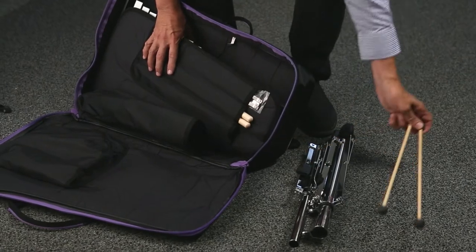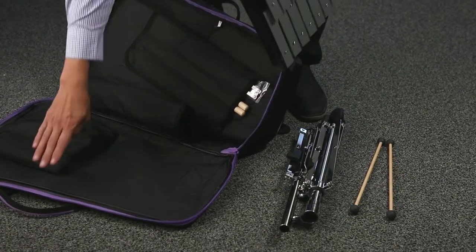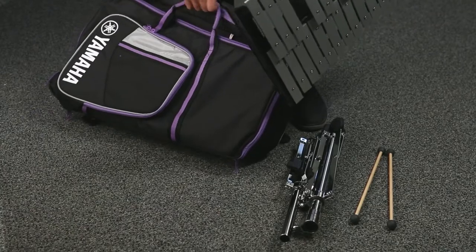You should have two metal pieces that are the stand, mallets, and the bells themselves. Some kits also include a practice pad and drumsticks.